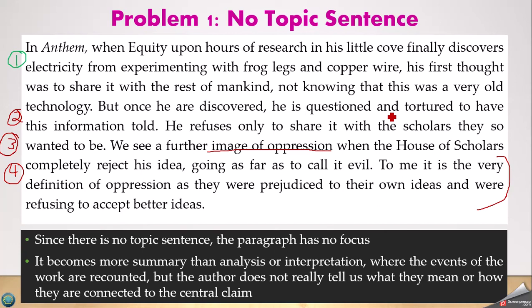The second problem is using words like 'image' when it's not imagery — it's really conflict. There's also first-person language. The statement 'it's the very definition of oppression as they're prejudiced to their own ideas and refusing to accept better' is actually an interesting nugget of an idea, but it's buried in this unfocused paragraph where you can't really tell what point the writer is trying to make.